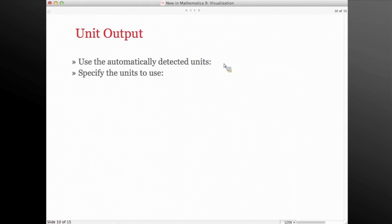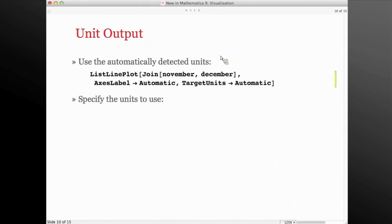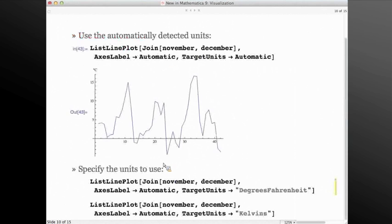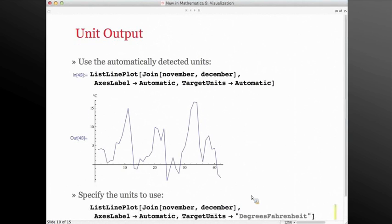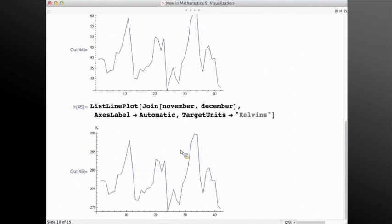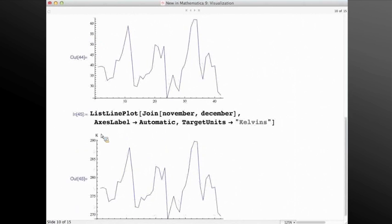And so now the question is, how do you control which units the plot is going to, the visualization is going to use? And the option for this is target units. By default, it's automatic. We've now seen this plot about three times. And we can see that it's in Celsius. Instead, I can say, I can use target units to say that I want it to be in Fahrenheit. And here we get the Fahrenheit scale. Or, I can even use Kelvins if I like. And we get Kelvin.